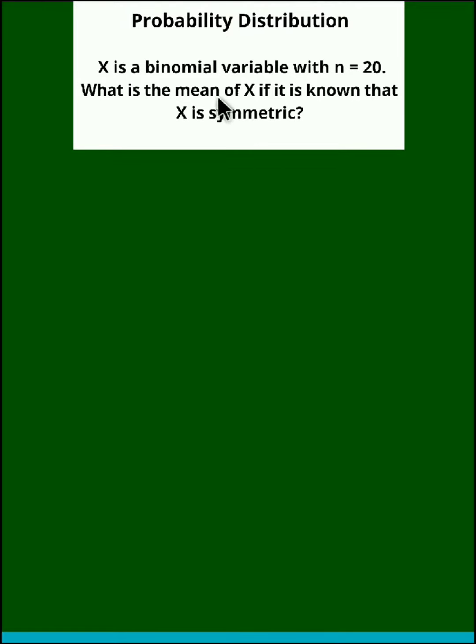Okay, now when the binomial distribution is symmetric we know that probability of success, that is P, is equal to probability of failure, that is Q, and both are equal to 0.5.